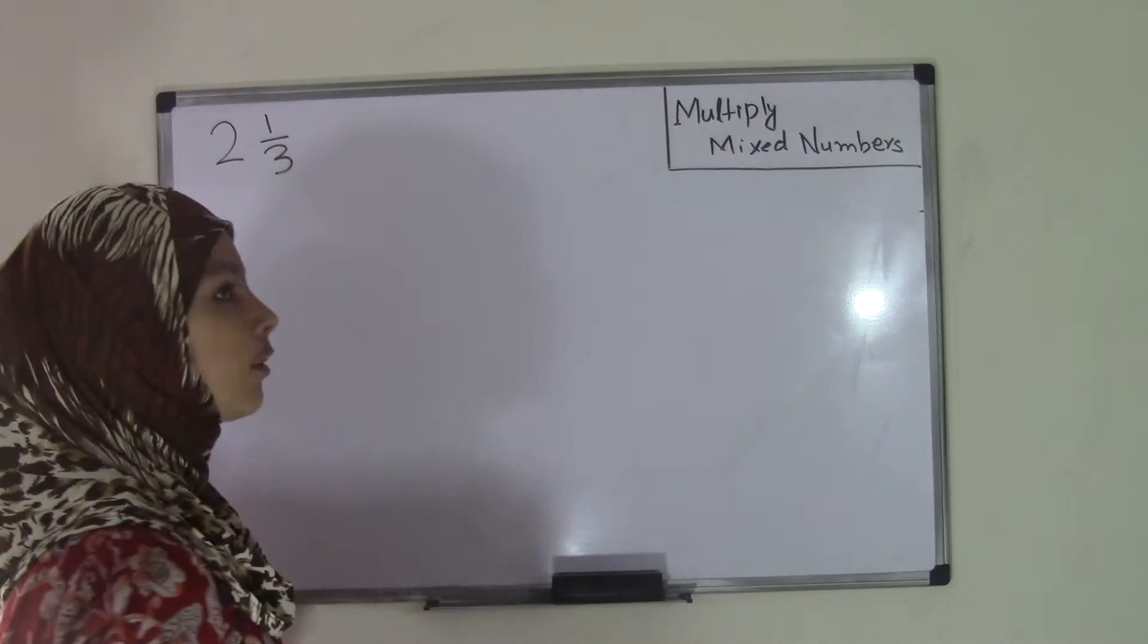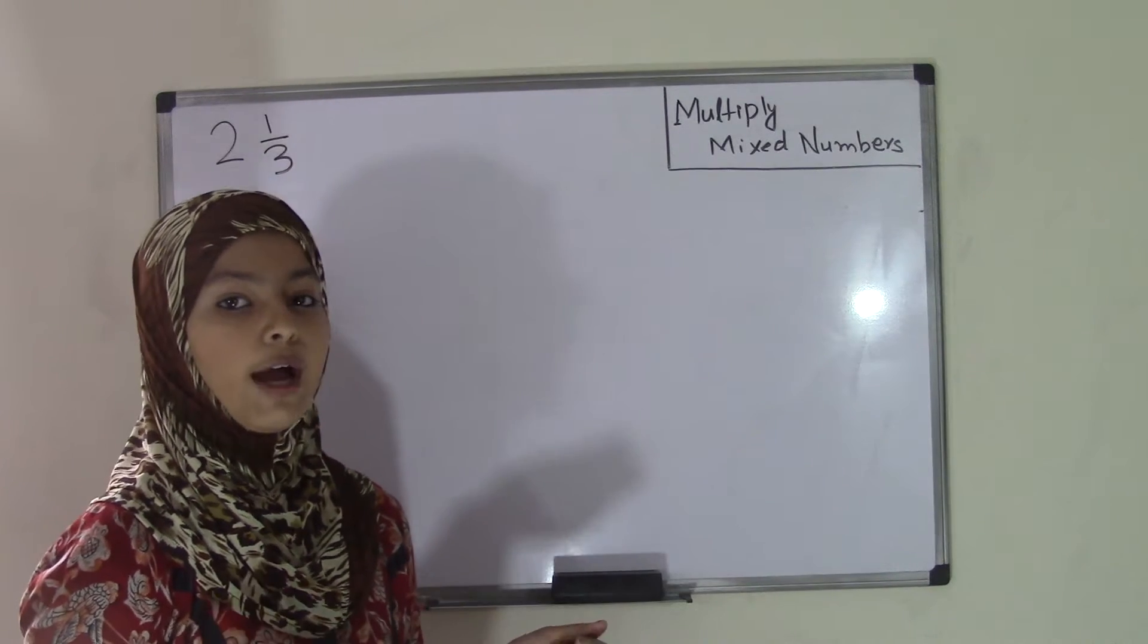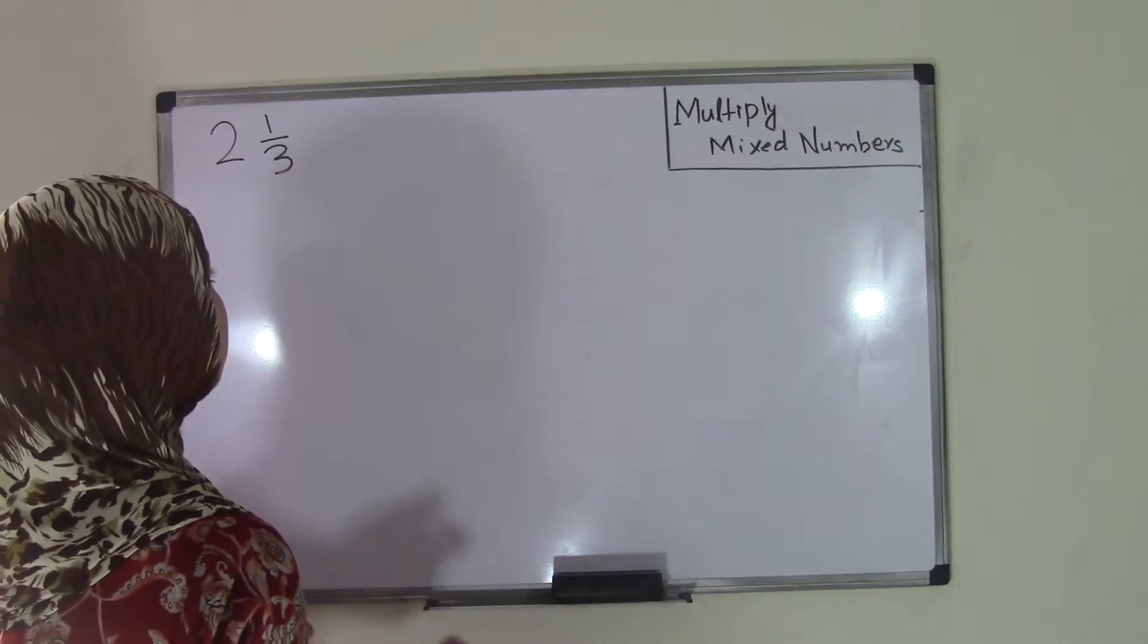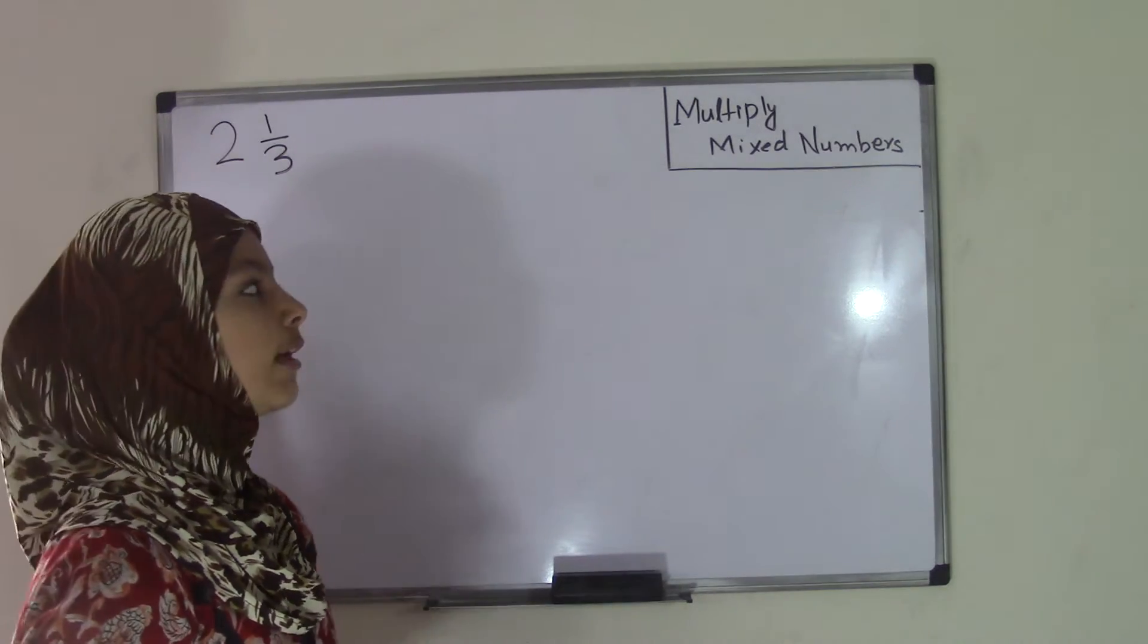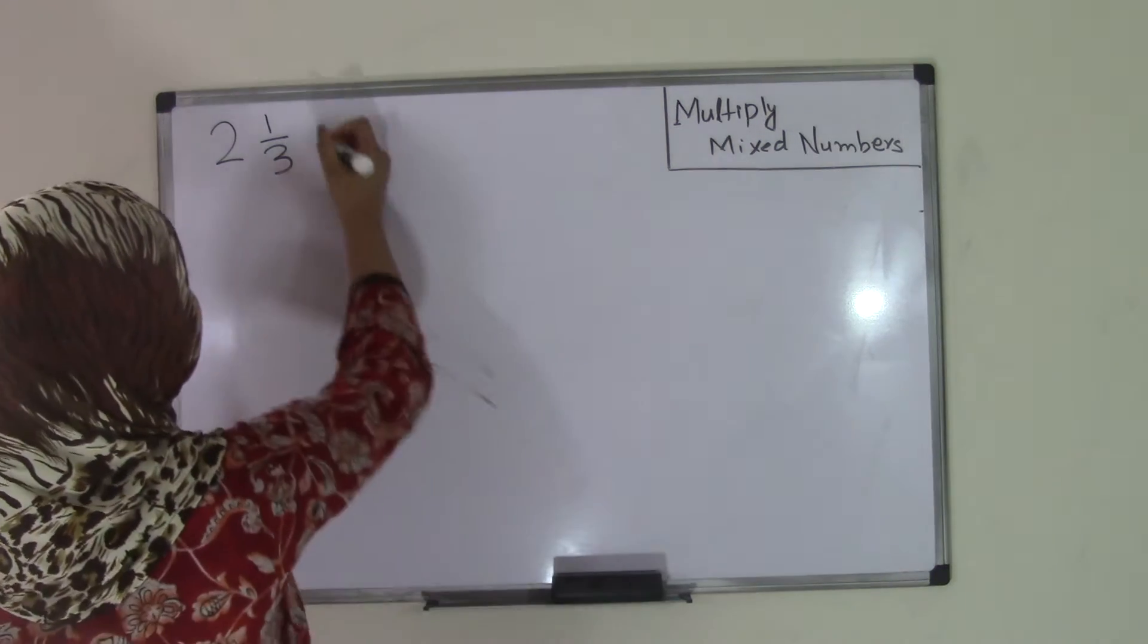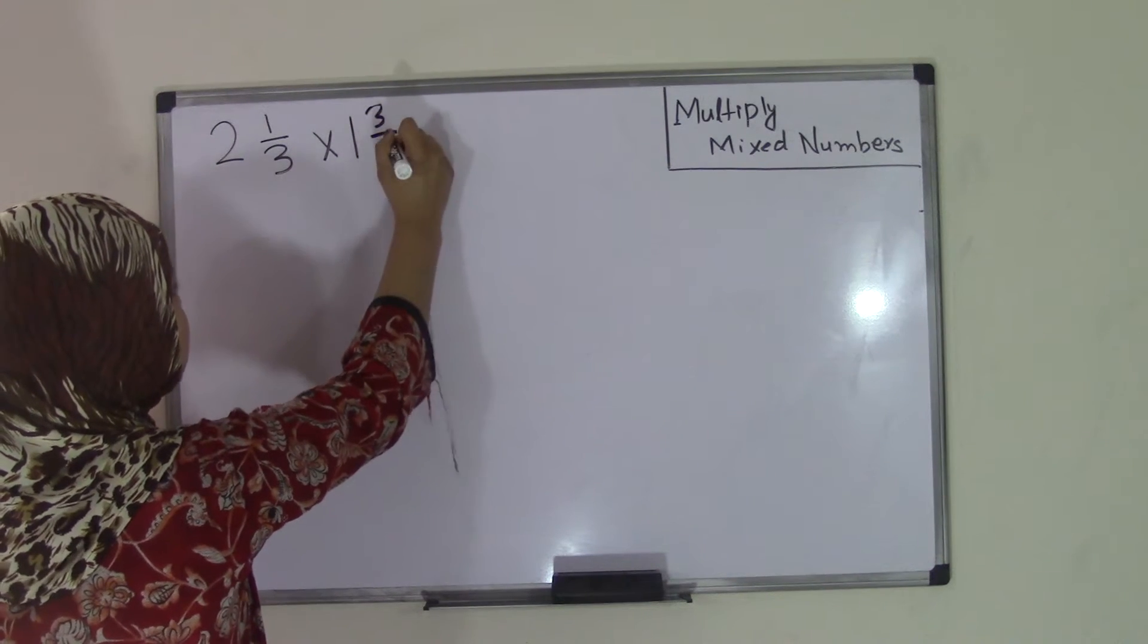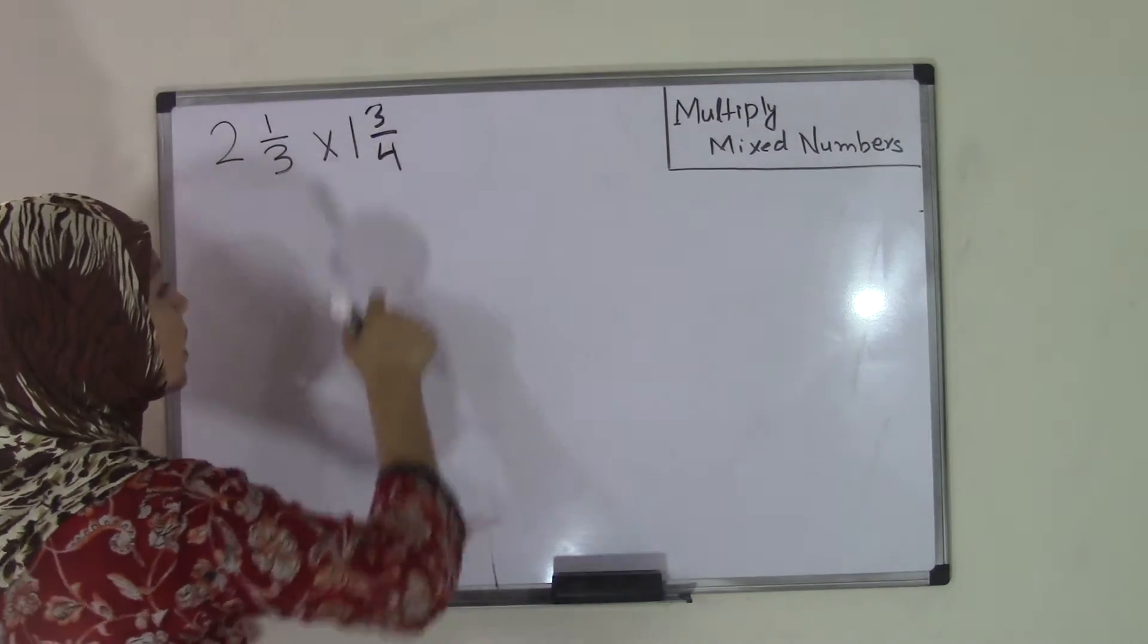Together they make 2 and 1/3. So a real example could be you have 2 whole pizzas and 1/3 of a pizza, so now you have 2 and 1/3 pizzas. So that's one mixed number, and today we're going to be multiplying two mixed numbers. So another mixed number could be 1 and 3/4. So now we have our problem 2 and 1/3 times 1 and 3/4.